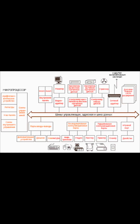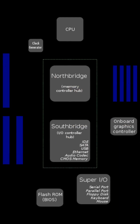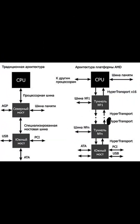Every microprocessor has an address space — that is, access to a certain range of addresses used to communicate with other devices: RAM, graphics card, sound card, and other components. For this, it uses an address bus, a special channel for transmitting addresses, and a data bus for transmitting data.